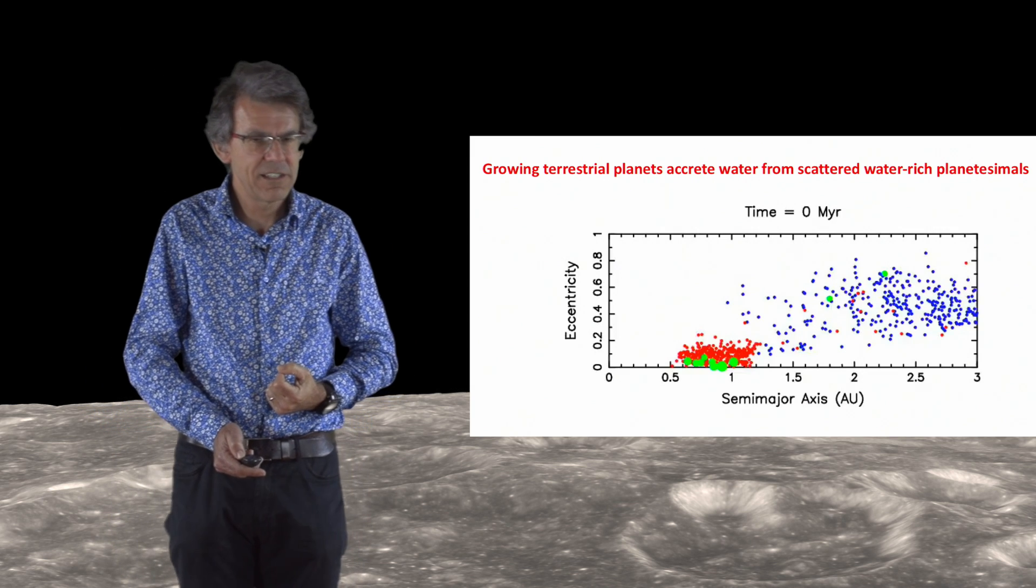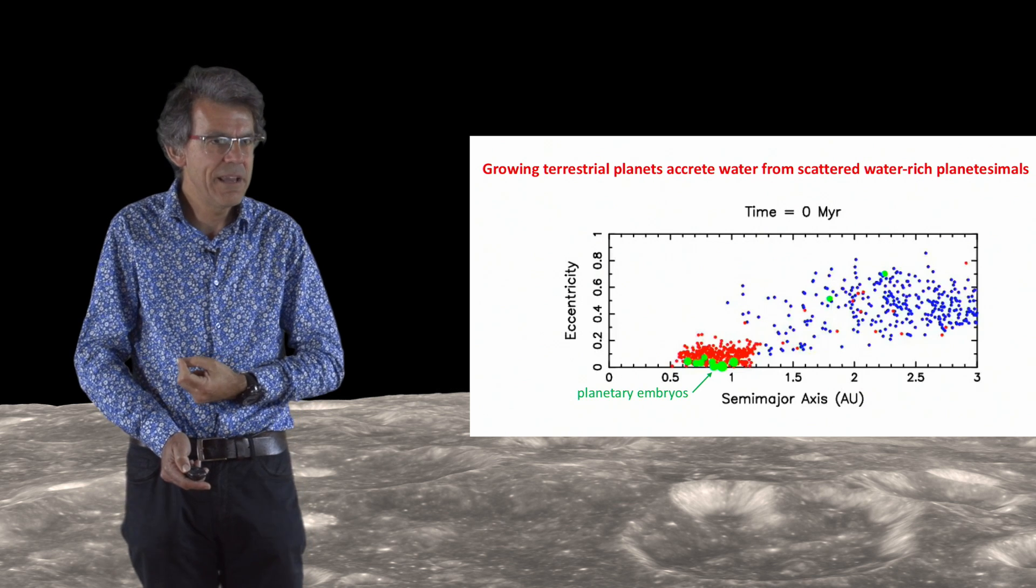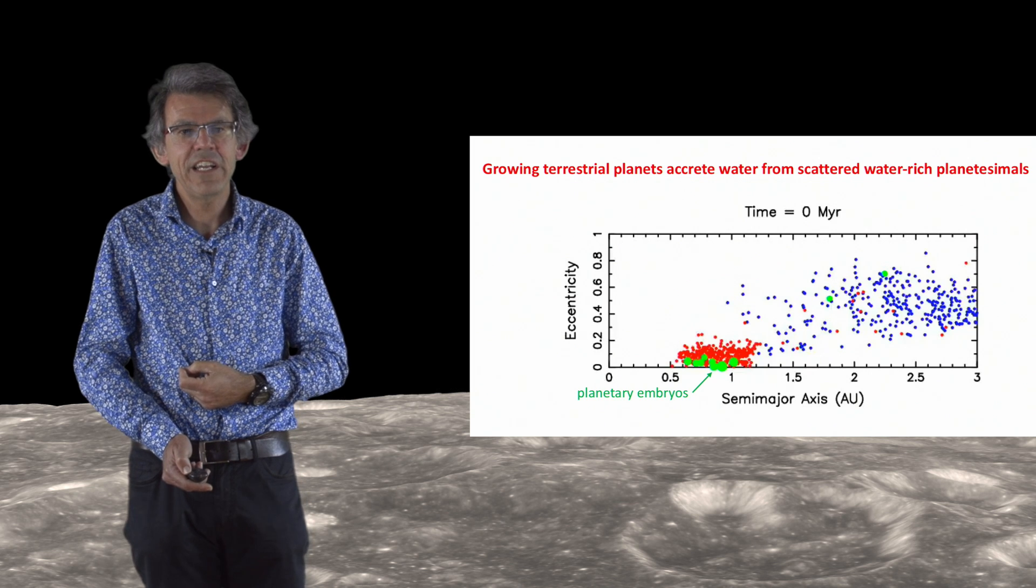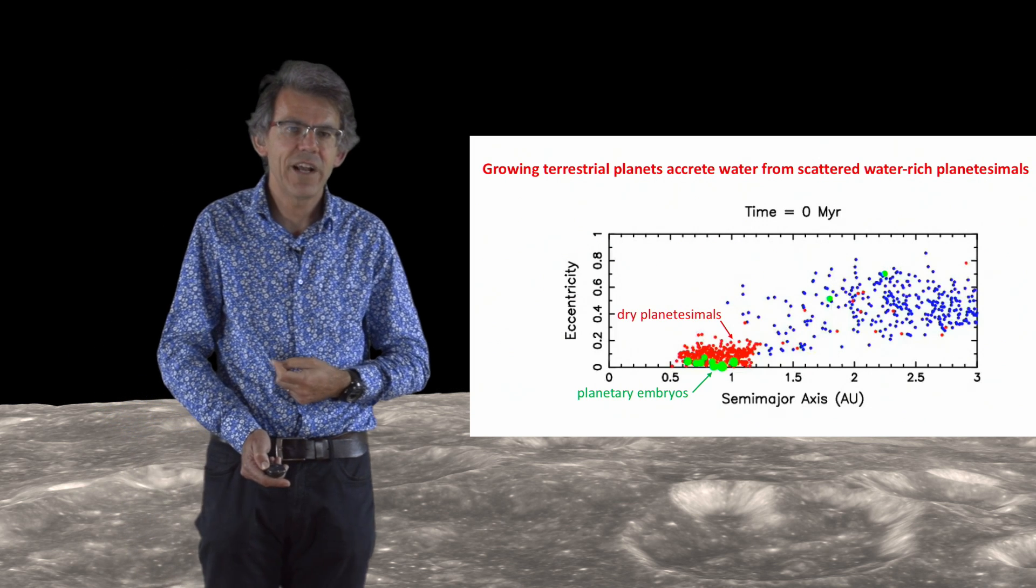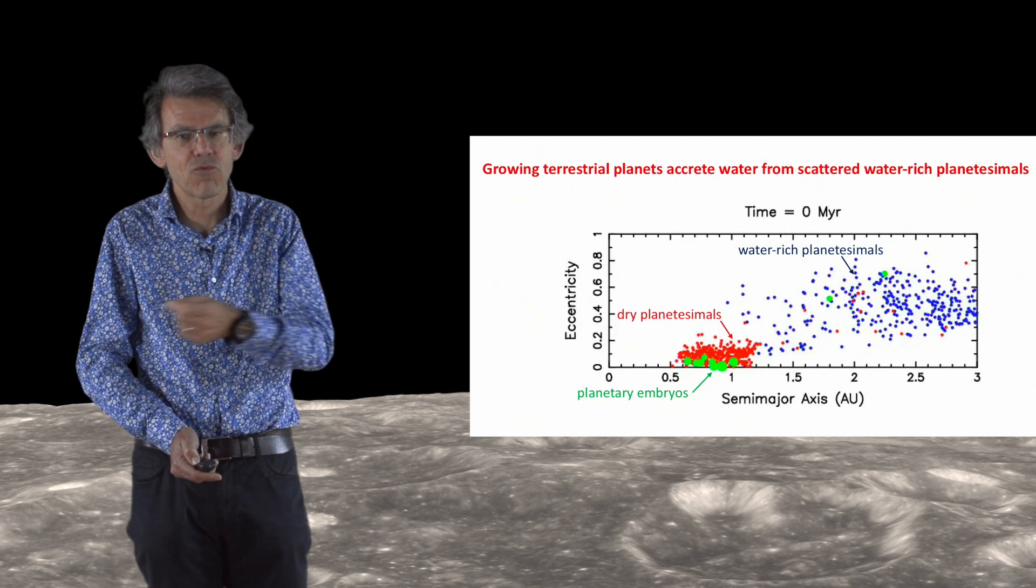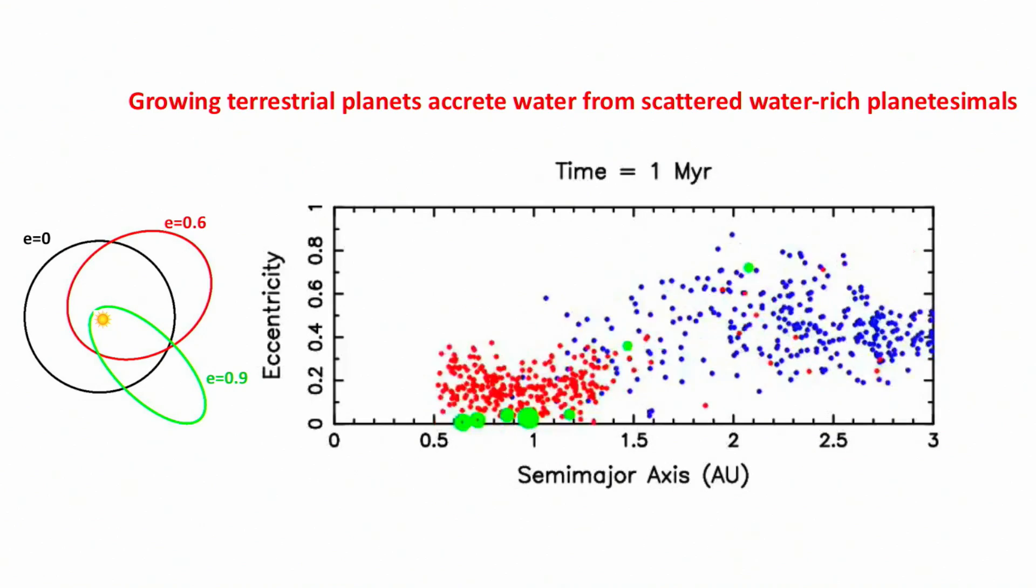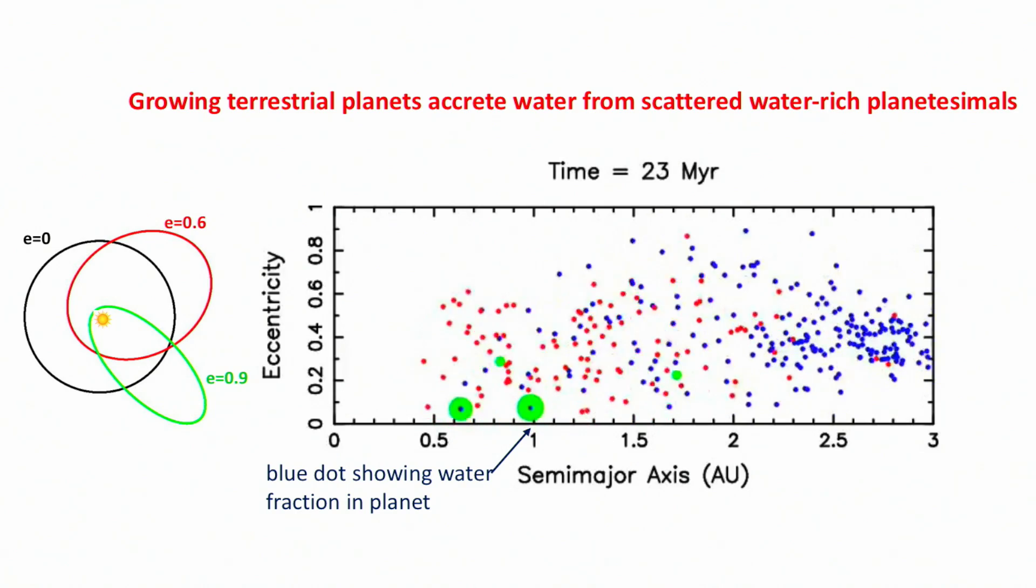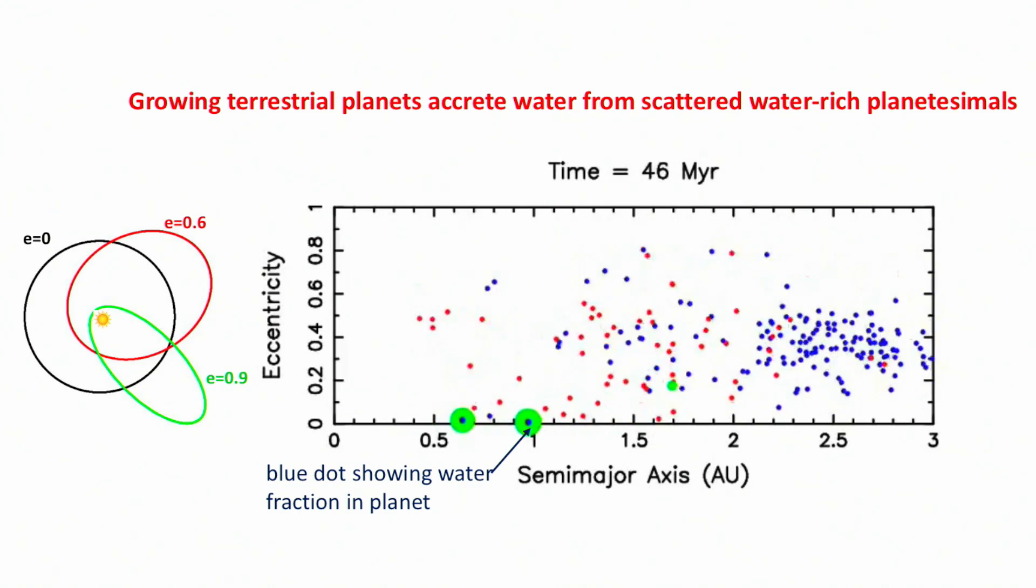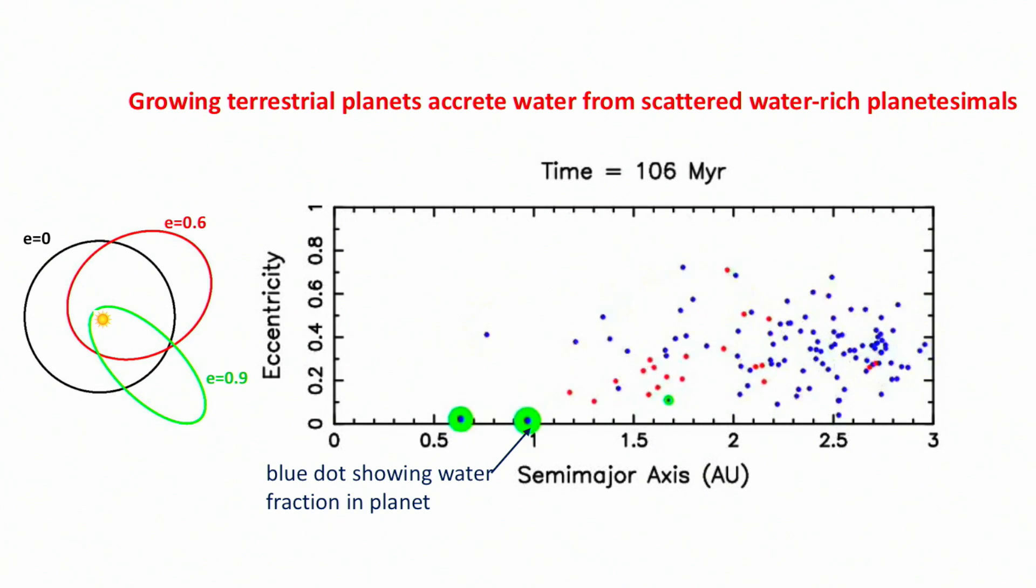This animation shows how the water is incorporated in the growing terrestrial planets. The terrestrial planets primarily form from a ring in the inner solar system made of planetary embryos, here illustrated in green, and dry planetesimals, here depicted in red. But there are also these water-rich carbonaceous planetesimals scattered in by Jupiter, either through migration or growth, on eccentric orbits in the inner solar system. And now we will see an animation showing the evolution of this system where the orbits are represented as a function of their size, so the semi-major axis on the horizontal axis, and the eccentricity, so the shape of the orbit as indicated in this scheme on the vertical axis.